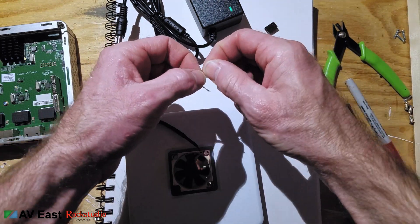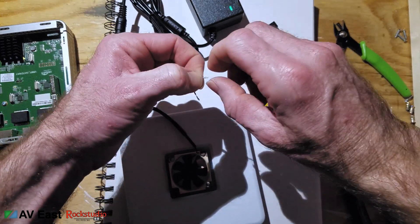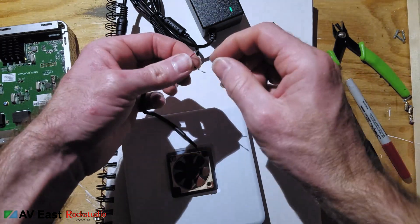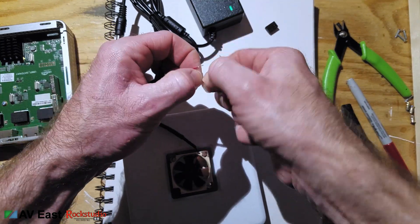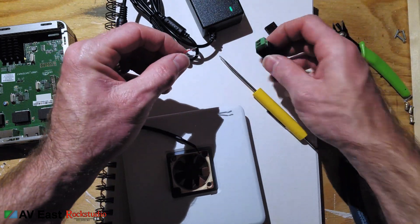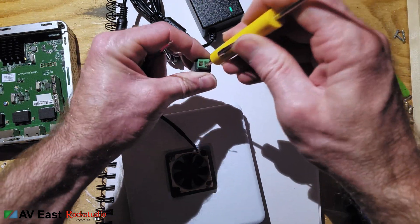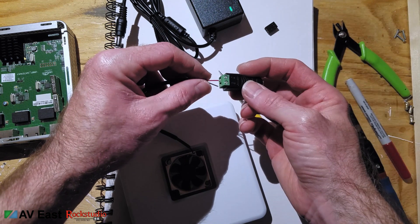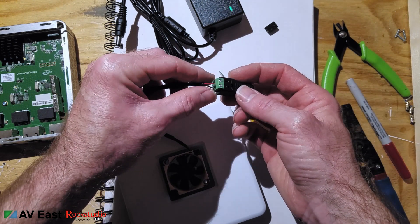Then since these conductors are really small I'm going to strip them twice as long as I need to and double them up and twist them together after I've doubled them up. Then double check the polarity on the barrel connector. Insert the wires and clamp them down really tight.